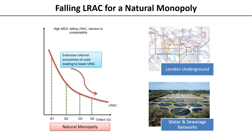The same applies to water and sewerage networks. We really don't need three or four different sewerage pipes to each and every house so that the consumer can decide which firm to choose for water and sewage services. We really only need one network.